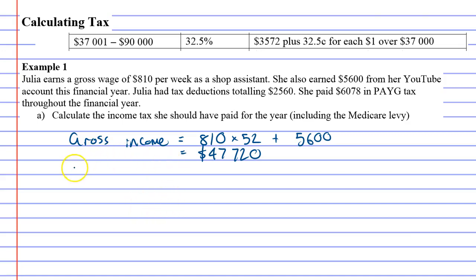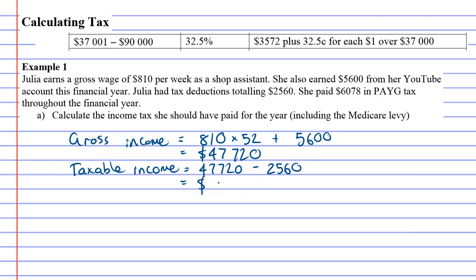Now that's the gross income. We've got to talk about what's called taxable income, because you can't calculate your tax until you know what the taxable income is. What we do is take the gross income and subtract any tax deductions, which we are told are worth two thousand five hundred and sixty dollars. So forty-seven thousand seven hundred and twenty minus two thousand five hundred and sixty comes to forty-five thousand one hundred and sixty dollars.